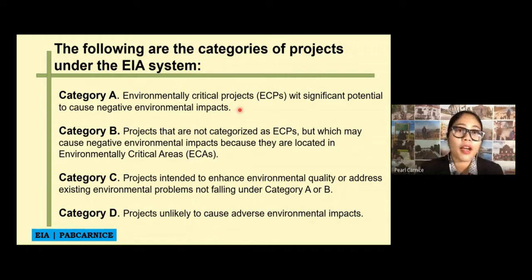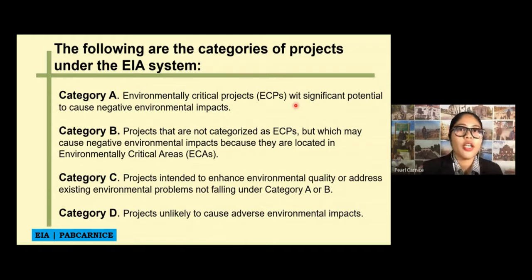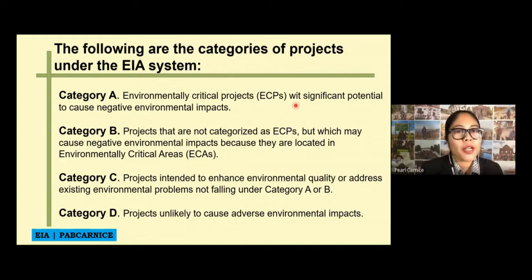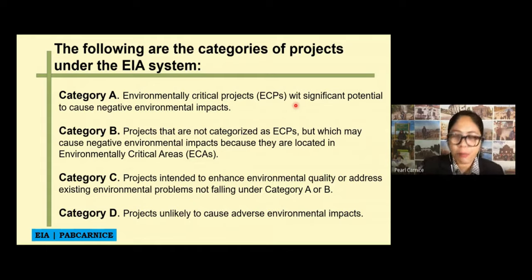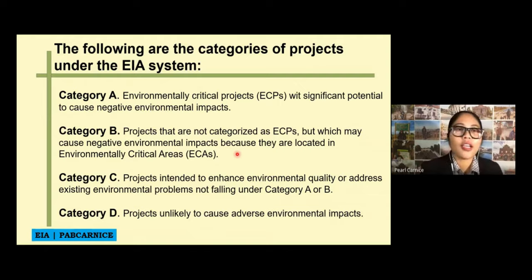Category A is ECPs — Environmental Critical Projects — with significant potential to cause negative environmental impacts. Category B covers projects that are not categorized as ECPs but may cause negative environmental impacts because they are located in Environmentally Critical Areas, or ECAs. So remember: Category A considers the nature of the project itself as ECPs, while Category B considers the location — environmentally critical areas.